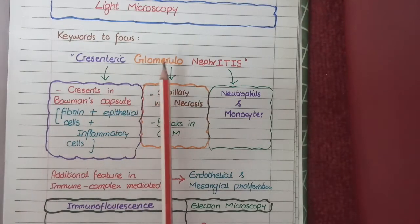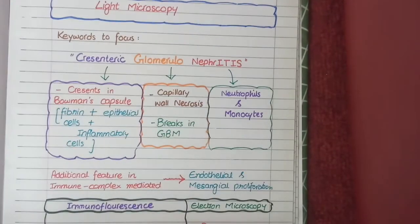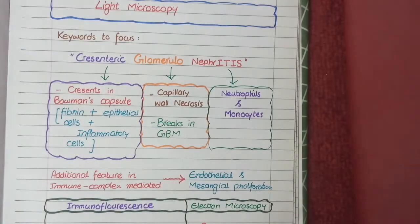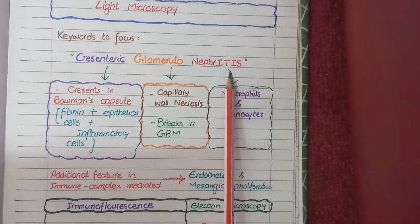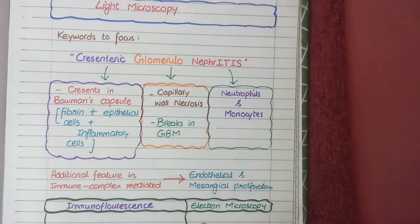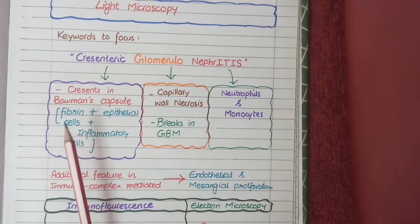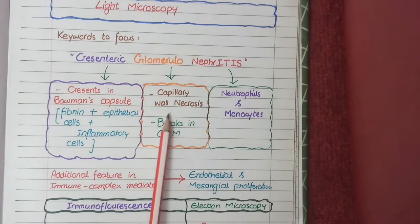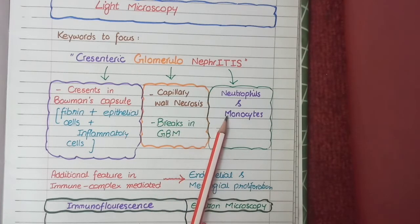The second keyword is 'glomerular,' which implies there will be damage to glomeruli resulting in capillary wall necrosis and breaks in the glomerular basement membrane caused by severe glomerular injury. The third keyword is 'nephritis' — as '-itis' stands for inflammation, you will see neutrophils and monocytes. Overall, the main features are: crescents in Bowman's capsule made up of fibrin, proliferating epithelial cells, and inflammatory cells; glomerular capillary wall necrosis with breaks in the glomerular basement membrane; and infiltrating leukocytes including neutrophils and monocytes.